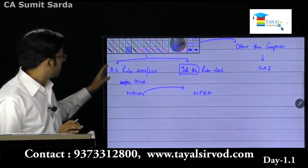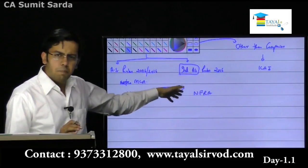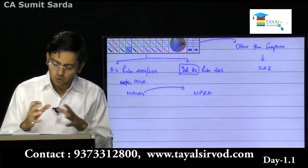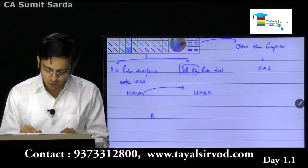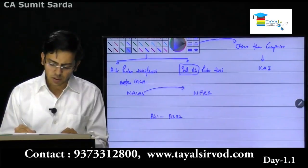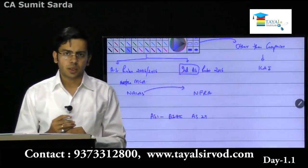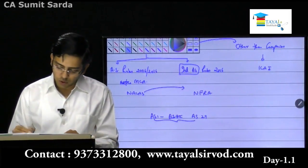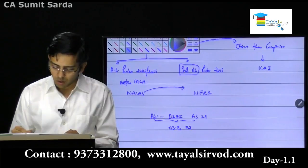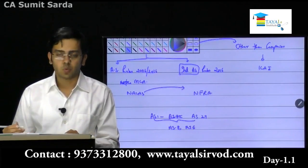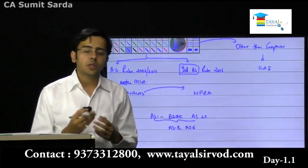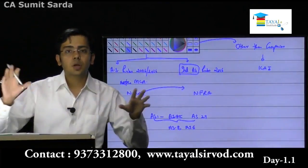When we talk about big companies, Indian Accounting Standards apply, and we will discuss that part later. From AS 1 to AS 29, there are two numbers missing: AS 6 and AS 8 no longer exist, so we have 27 standards to study. Now, can we make all 27 standards applicable to all companies all over India? We need uniformity so that stakeholders are well informed. But where are the major stakeholders?